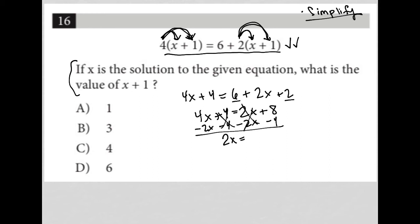And then my regular number, my integer on the right, 8 minus 4 is 4. I can divide both sides by 2, which leaves me with x equals 2.